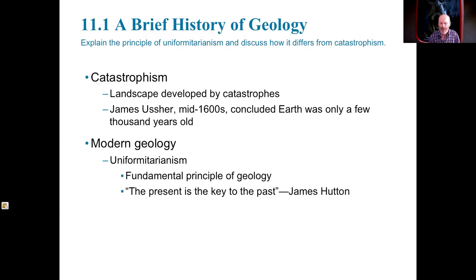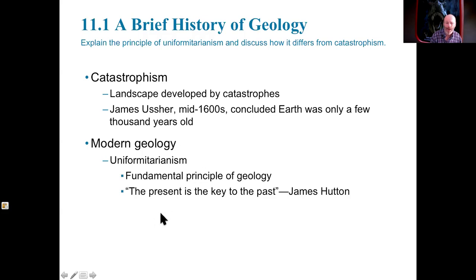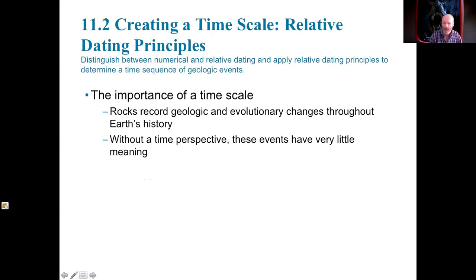Modern geology sees that this catastrophe idea is certainly a part of what shapes things, but there's a lot more going on. As we look at what's happening on the planet today, we can see a uniformity with what's happened in the past. If we look at different parts of the planet, we can see the same forces shaping each of the continents and the oceans over time. So we look for time perspectives and a time scale. This is relative dating.